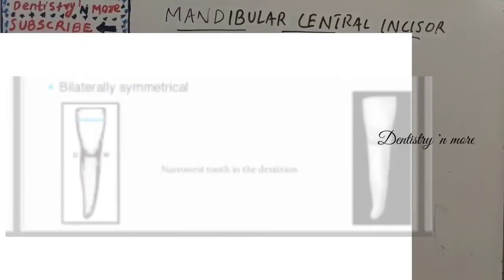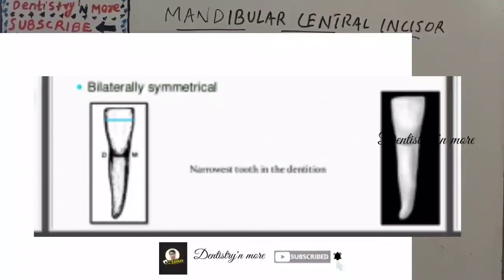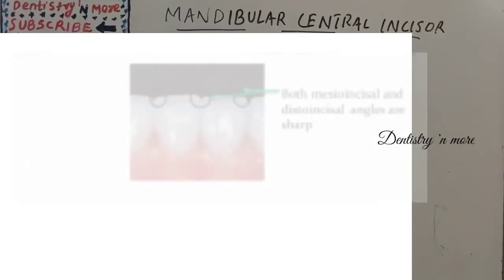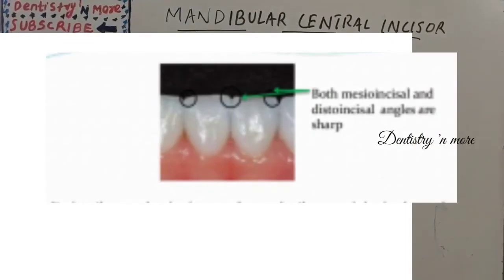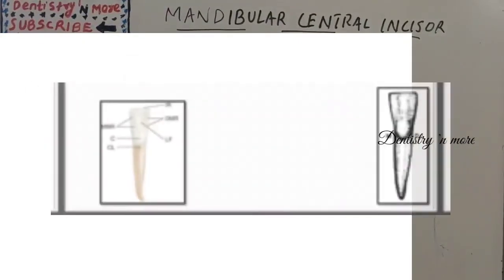Looking at the labial surface, the mandibular central incisor is the narrowest tooth mesiodistally of all permanent teeth. It is bilaterally symmetrical. Both the mesio-incisal and disto-incisal angles are very sharp and at right angles. It is the only incisor where both mesio-incisal and disto-incisal angles are sharp.